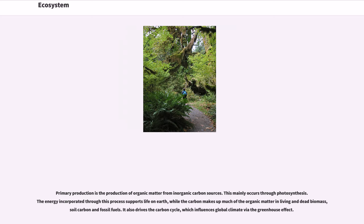Primary production is the production of organic matter from inorganic carbon sources, which mainly occurs through photosynthesis. The energy incorporated through this process supports life on earth, while the carbon makes up much of the organic matter in living and dead biomass, soil carbon and fossil fuels.